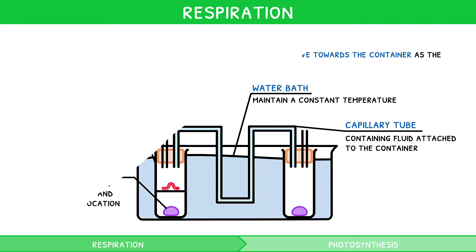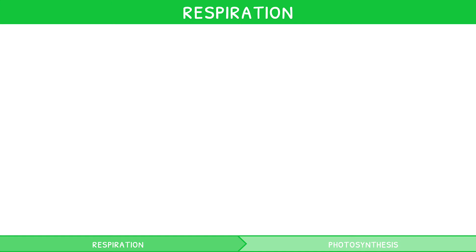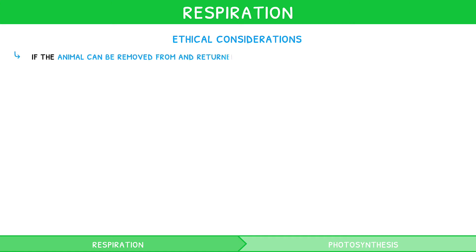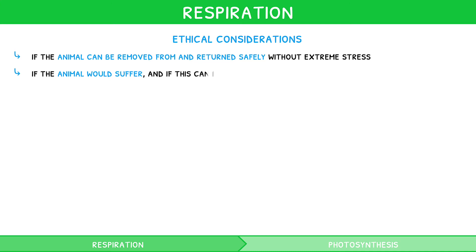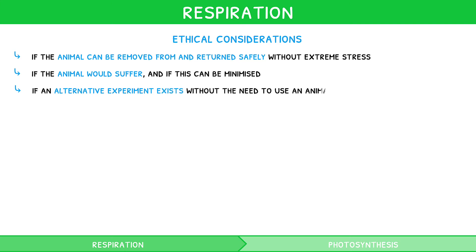Containing an organism in a closed container has ethical considerations. There are three main concerns to be aware of: whether the animal can be removed from and returned safely to its habitat without extreme stress, whether the animal would suffer and if the suffering can be minimised, and whether an alternative experiment exists without the need to use an animal.